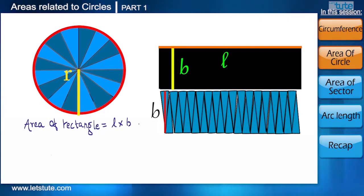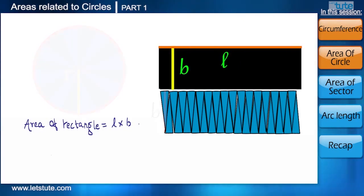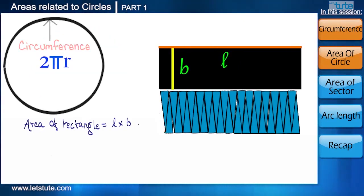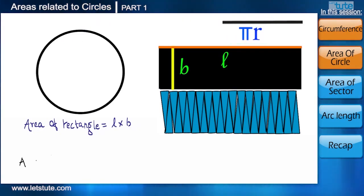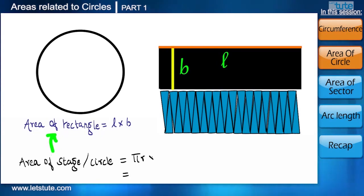We know area of rectangle is length multiplied by breadth. It is visible that the breadth of the rectangle is the radius of the circle whose area we need to calculate. But how do we find the value of the length? If we look closely, then the length is nothing but some part of circumference. So when we compare the length and circumference, we can see that it's half of circumference, that is πr.